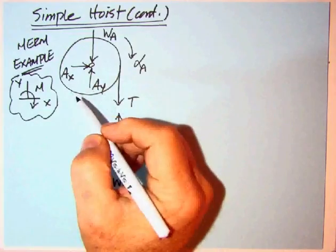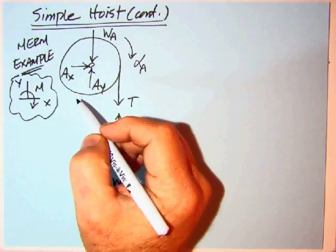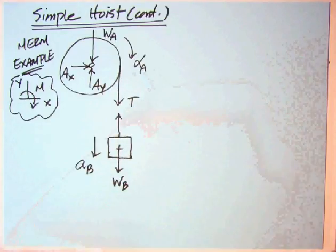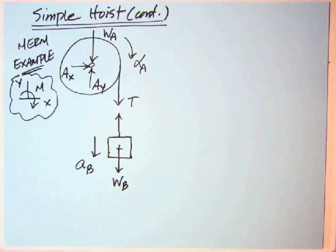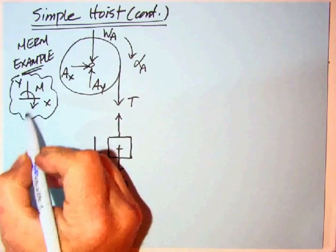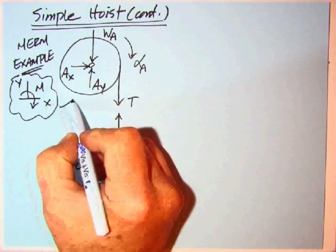Separating these, this is the MERM example released from rest. We've got the axle forces AX and AY, weight A. When you release, this should rotate clockwise, so alpha sub A would be that direction. The initial angular acceleration is zero just like the initial velocity is zero, releasing from rest. I'm going to use this coordinate system X, Y, and clockwise for that one.